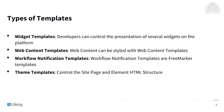There are four kinds of templates. Widget templates are used to control the presentation of several widgets on the platform. Web content templates let you style different web content to display in a certain way. Workflow notification templates are simply FreeMarker templates. And theme templates control the site page and element HTML structure — for example, if you wanted a header bar or footer bar displayed in a certain way, or wanted to show something consistent across all pages of the site.